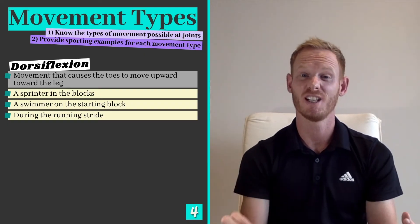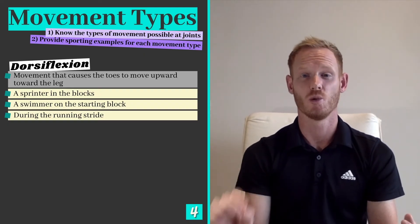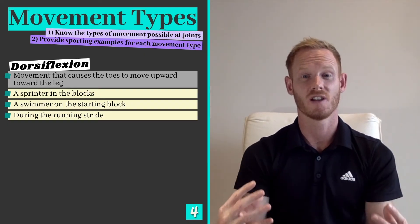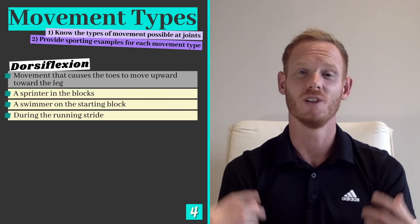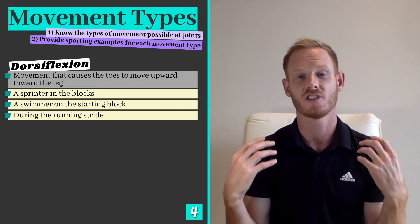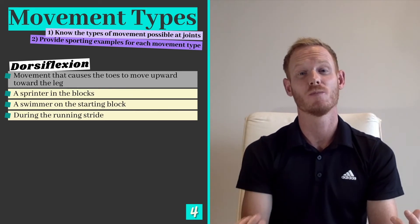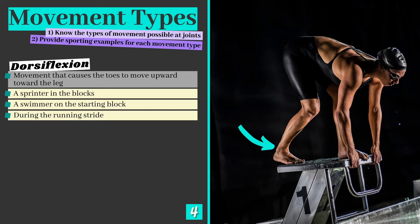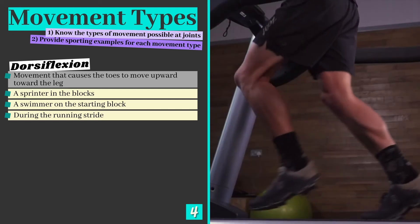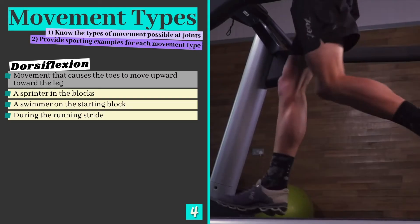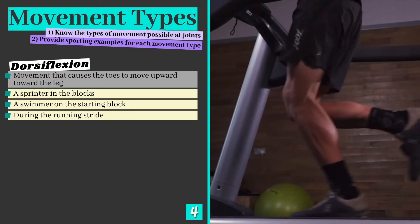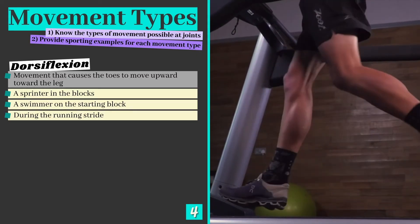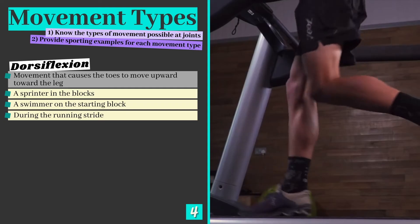The penultimate type of movement is dorsiflexion, which is unique to the ankle joint. Dorsiflexion causes the toes to move upwards towards the leg, and can clearly be seen when a sprinter is in the blocks, when a swimmer takes up their position on the starting block, or during the running stride. During the push-off phase the toes point slightly downwards, but dorsiflexion occurs as the leg moves forward before the next heel strike.